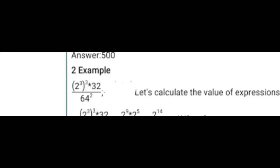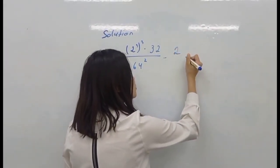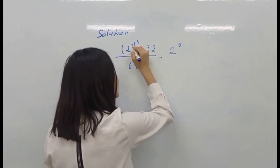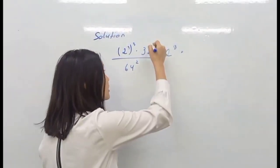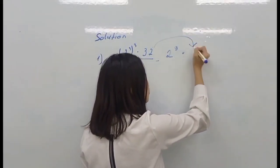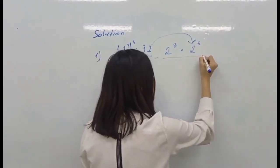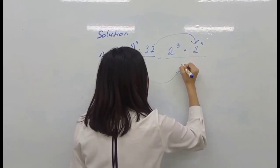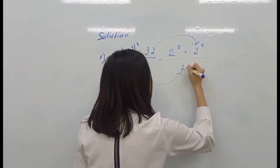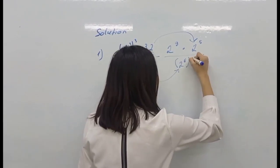Exercise 2 — solving this task. It will be equal to 2 to the power 9, because 3 multiplied by 3 gives us 9. We will write it this way: 2 to the power 5, over 2 to the power 6, and 8, and 3.